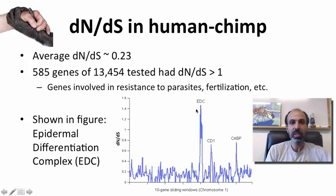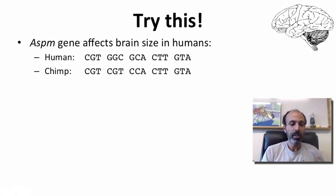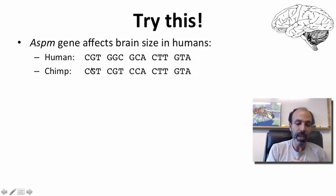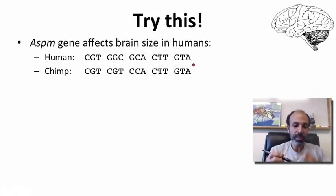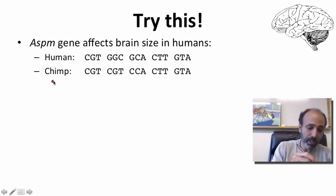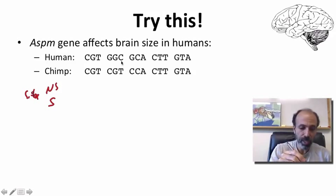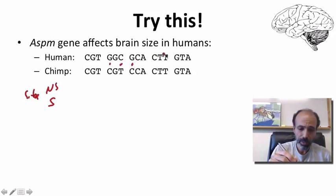Let me give you one to try yourself in an in-video quiz. This is the ASPM gene, which affects brain size in humans. I have here a set of sequences, and I want you to go through and calculate what the dN/dS value would be. Let's check it out and see what you got. We want to look at non-synonymous sites and synonymous sites, do the sites first, and then look at the actual changes — highlighting the bases that are actually different in each case.